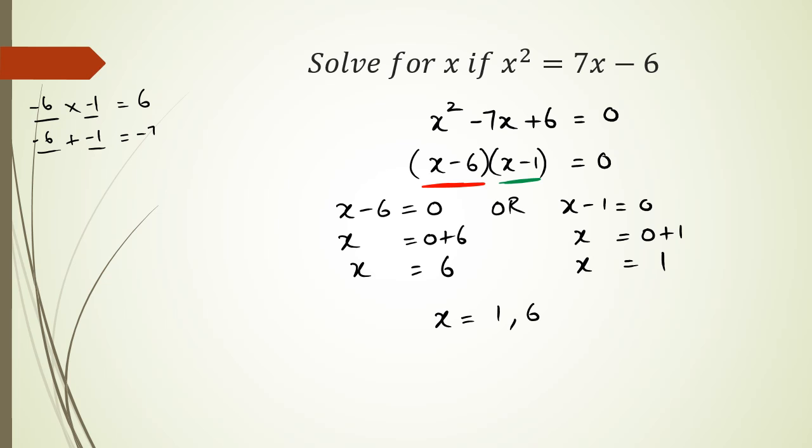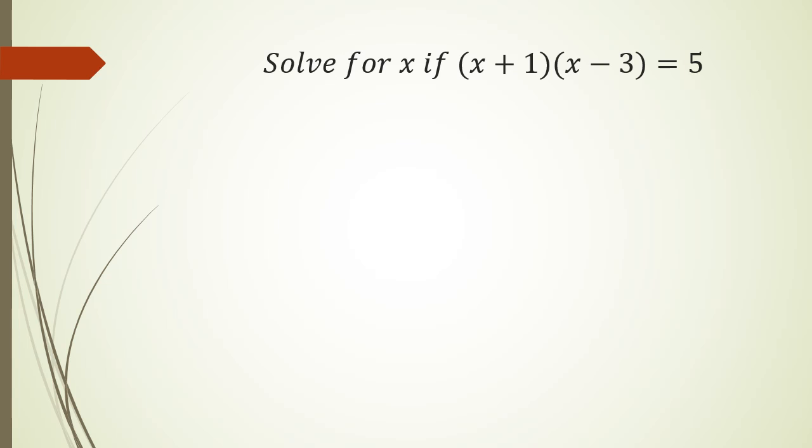All right, looking at another type of question where you have to rearrange is something like this. Now, here's the problem. You can't just go x plus 1 equals to 0, x minus 3 equals to 0 in this particular case. The reason is you've got to have 0 on that right-hand side. You've got to have 0 here, but you don't have 0.